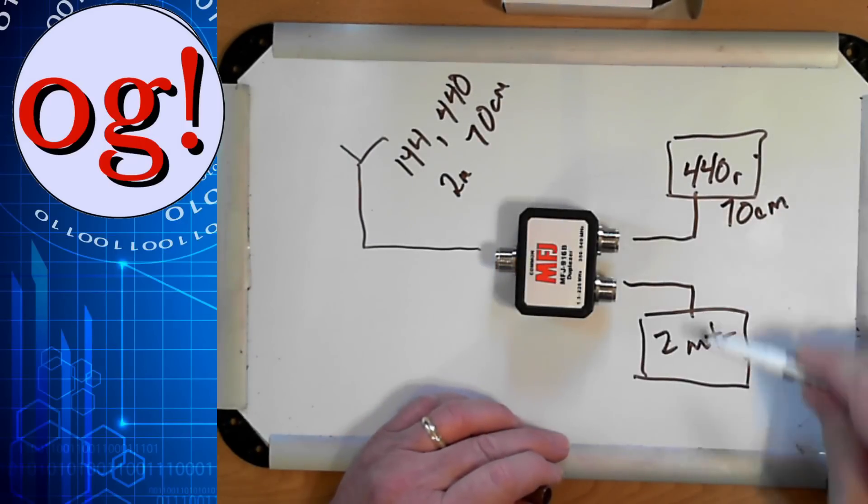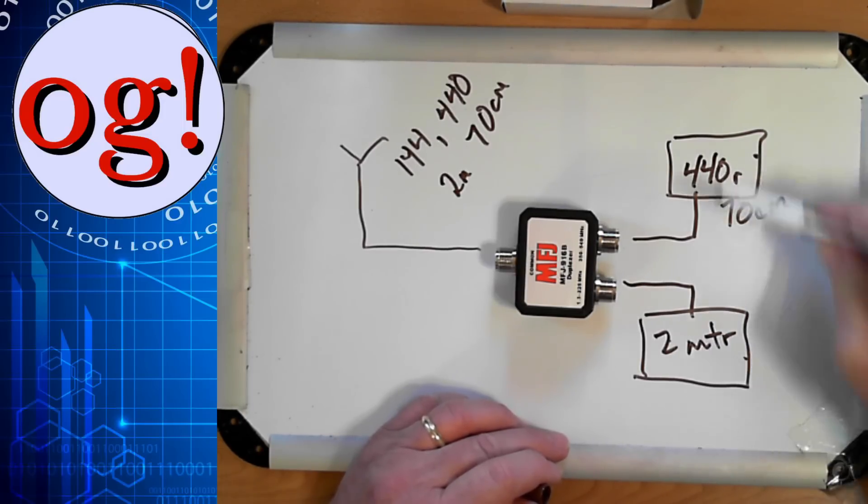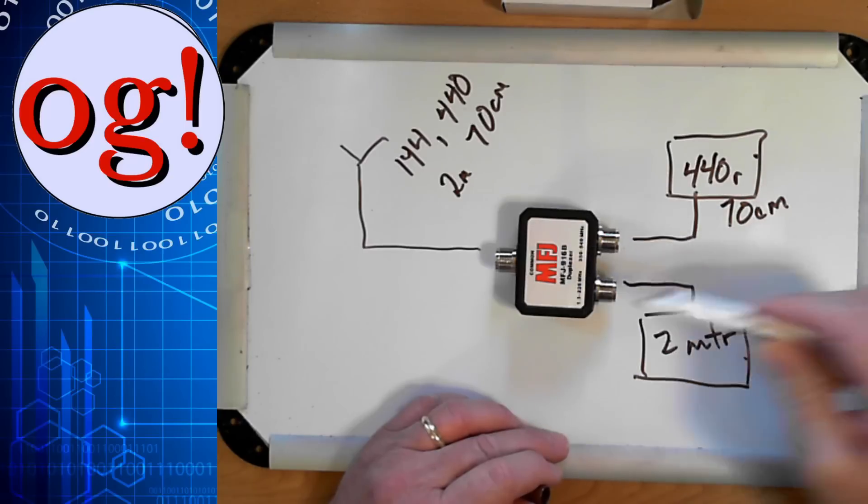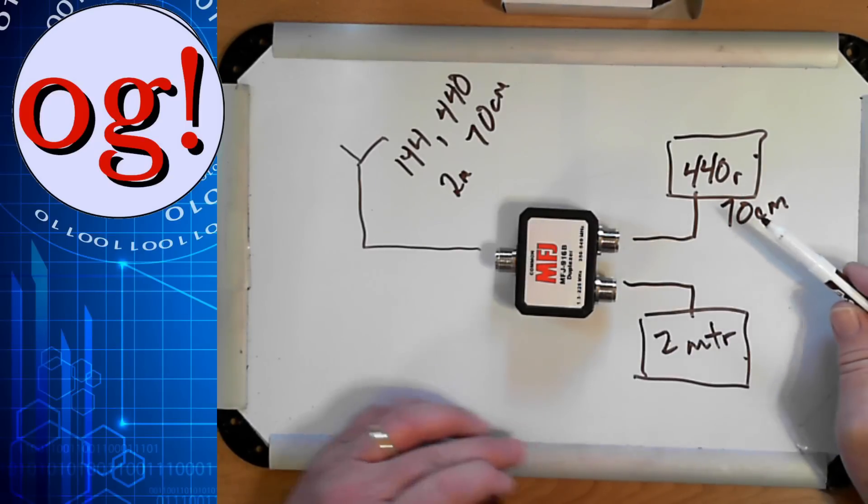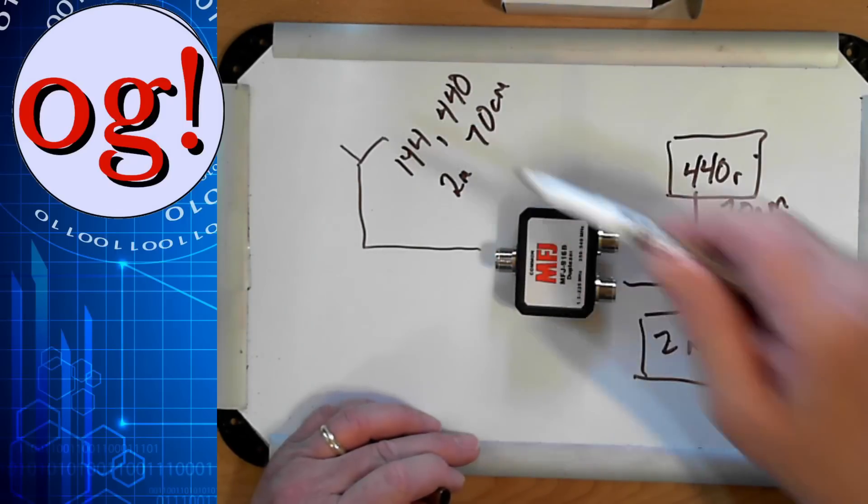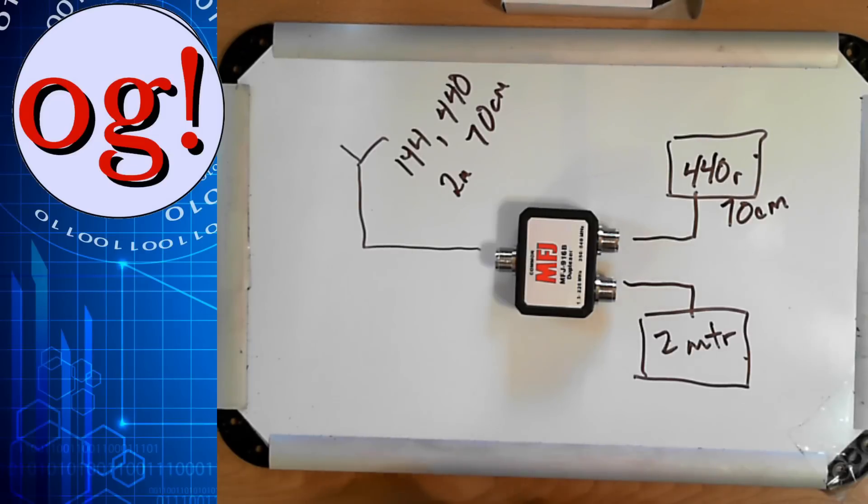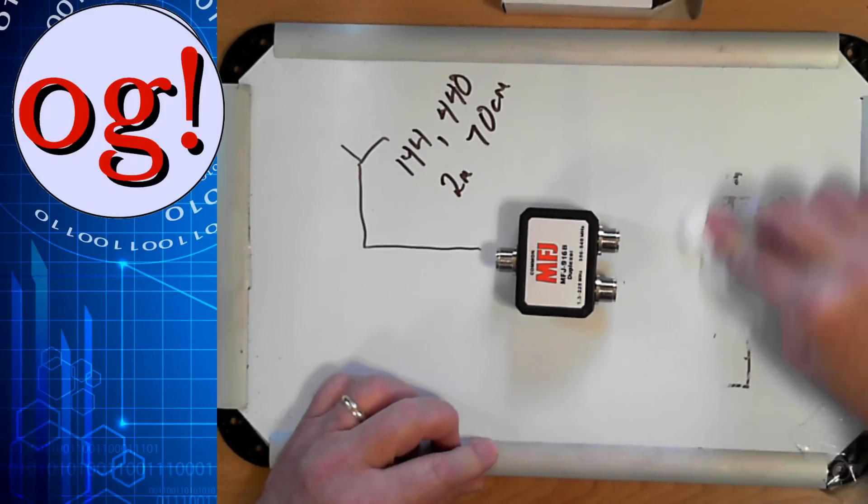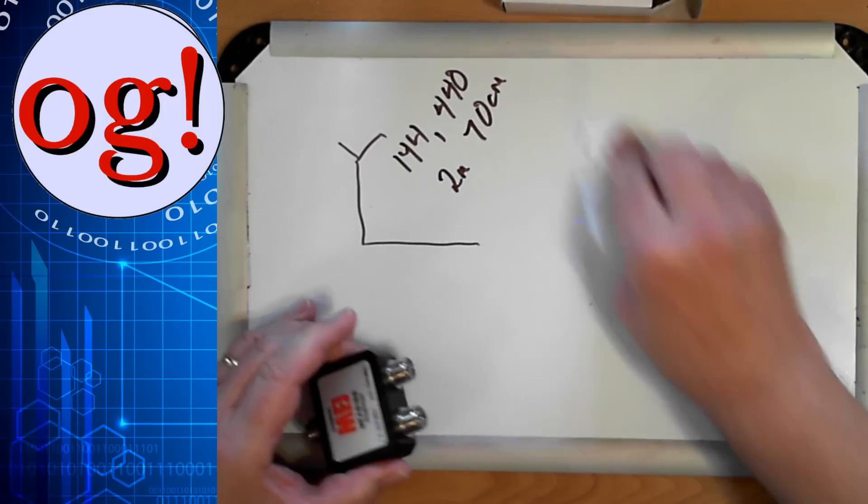These radios are completely independent of each other. You can talk on one and listen on the other and back and forth, and you get the separation inside this little duplexer. So out here, we have the common antenna. Now, if you want, you can do exactly the reverse, which is how I'm going to use it.